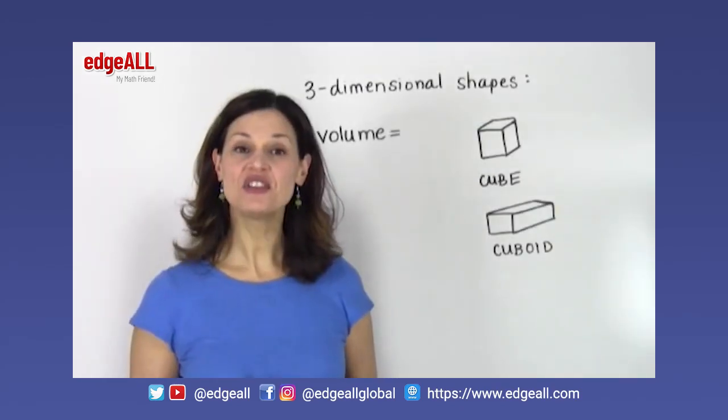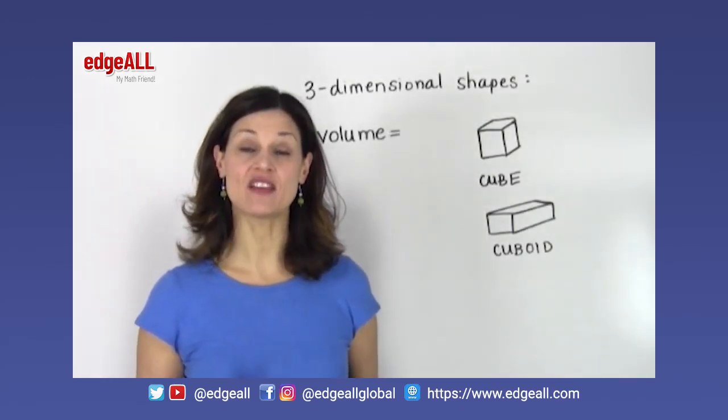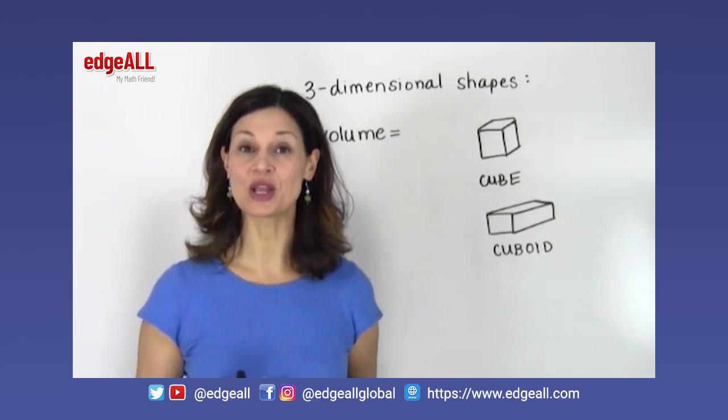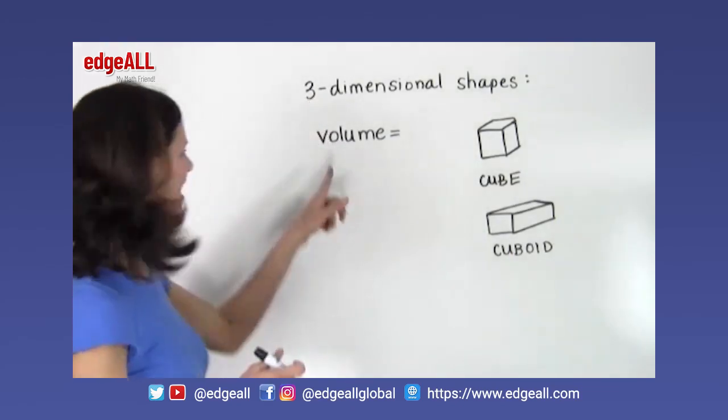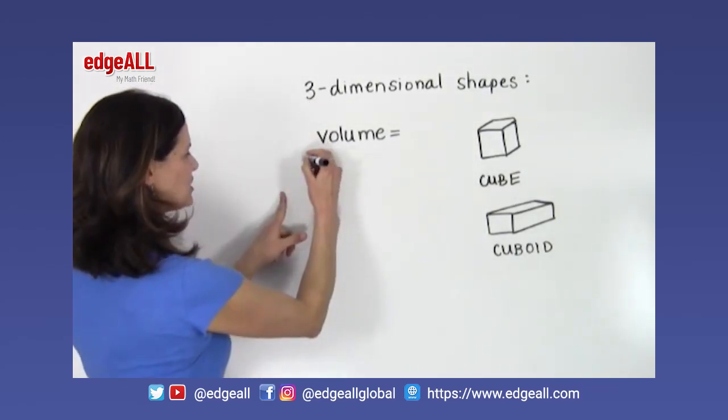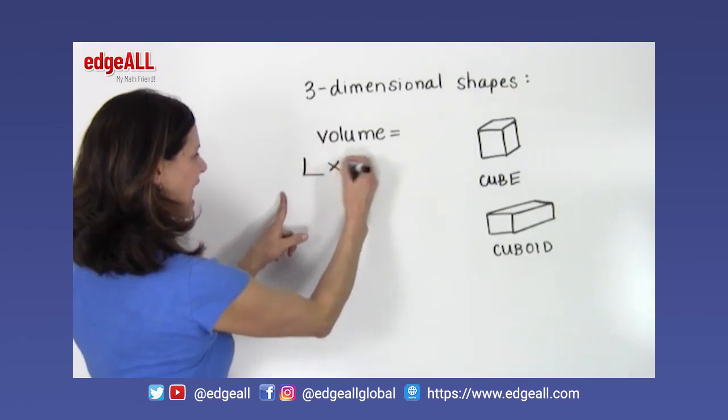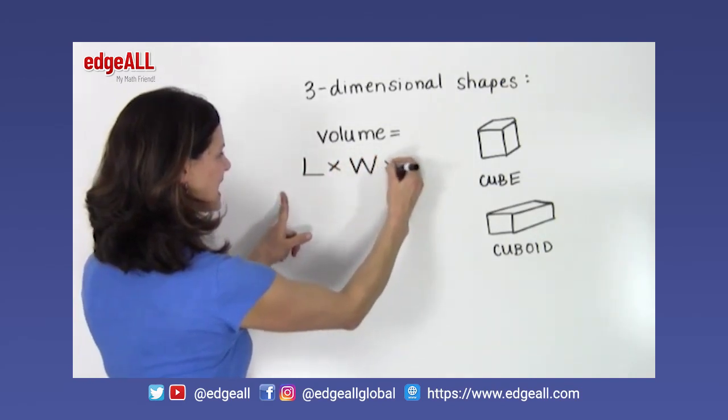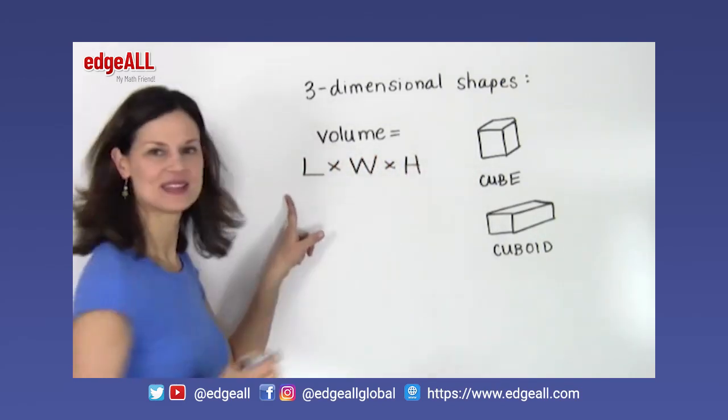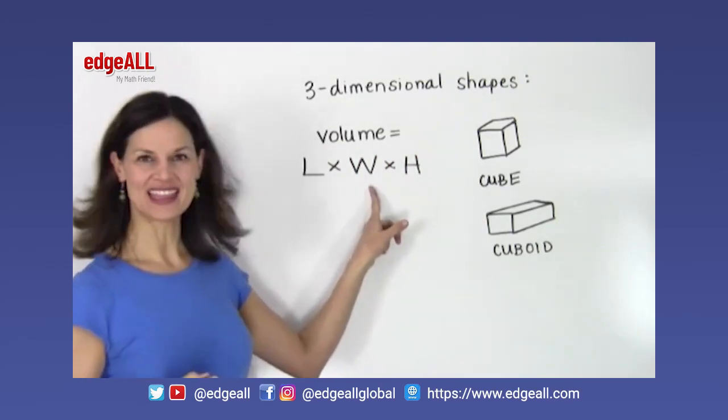The general formula for calculating the volume of a cube or cuboid is that volume is equal to the length times the width times the height. Length times width times height.